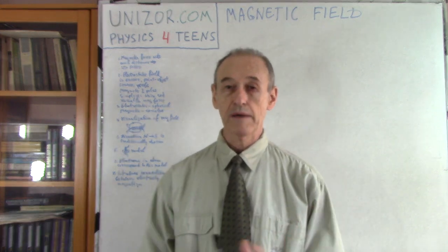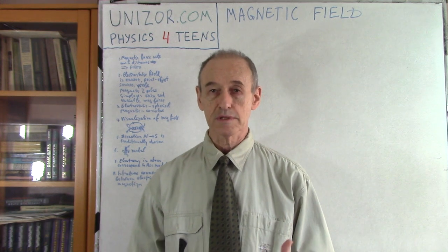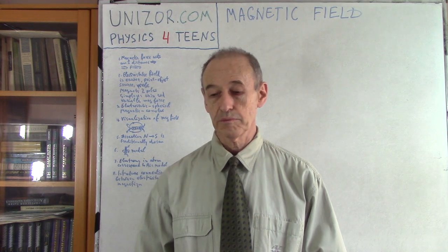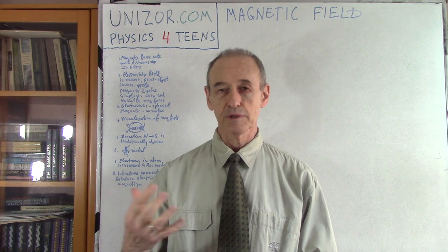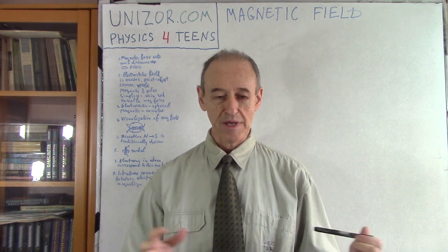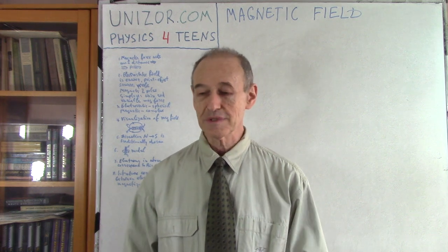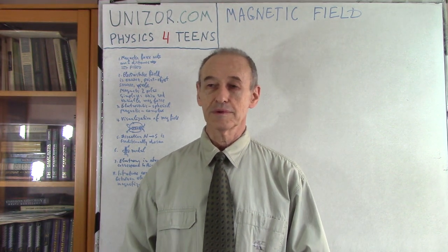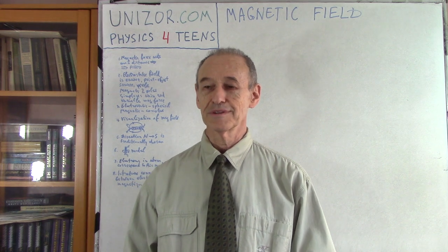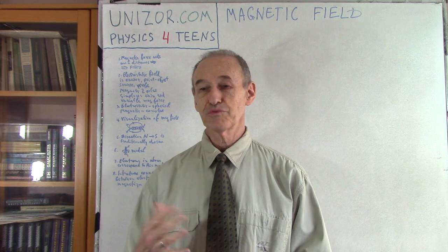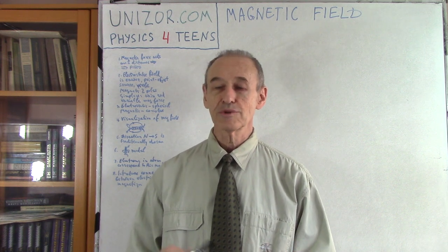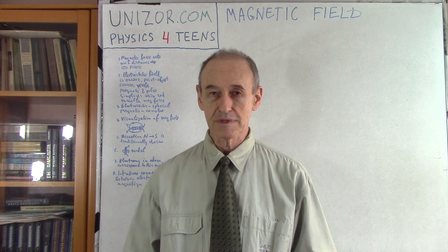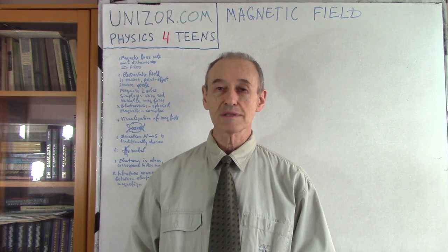First of all, we have the fact that magnetic force exists and it acts at a distance — a force which acts without really touching. Physicists have problems with this concept and they have come up with a model. Basically it's a word which describes the whole thing: it's a field, a force field. Introduction of that word doesn't really make it much easier to understand, but we deal with it and we know that there is such a concept as a field.